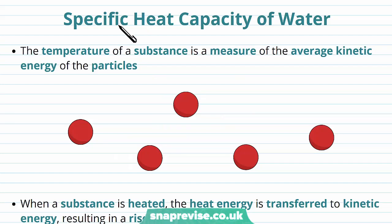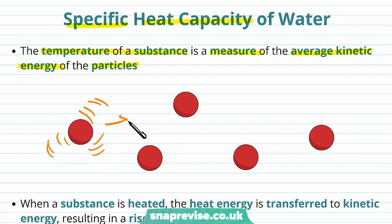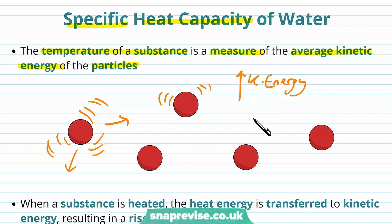We need to be familiar with a term called the specific heat capacity of water. The temperature of a substance is a kind of measure of the average kinetic energy of the particles. If particles have a high amount of kinetic energy, where every single particle was able to move and whizz around a lot, then it's said to have a high kinetic energy, and therefore a high temperature.